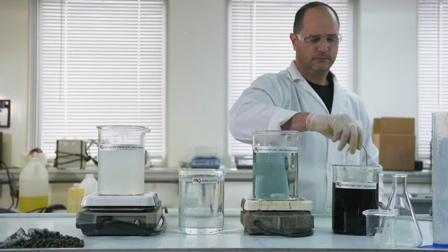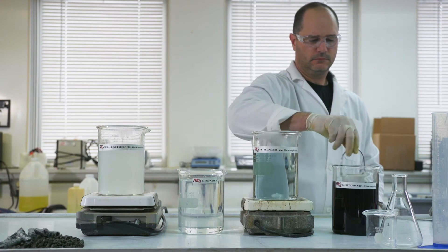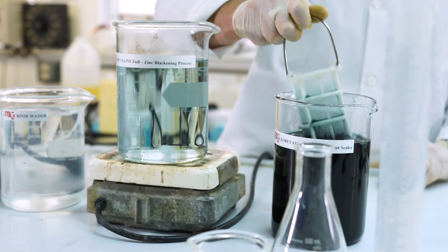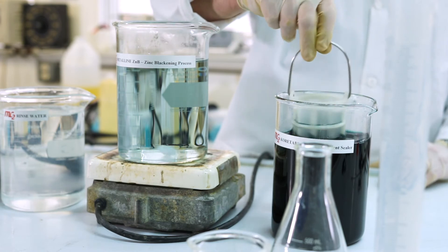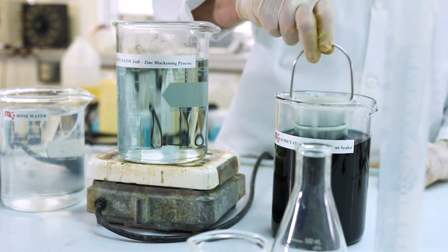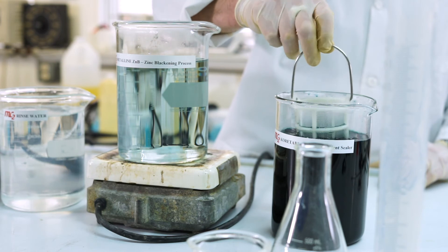After blackening, the parts are rinsed thoroughly then immersed into the MetaLine Coritard XTC Trivalent Chrome Sealer for 45 to 60 seconds. Coritard XTC is made up at 15% by volume and has an operating temperature range of 70 to 130 degrees Fahrenheit.